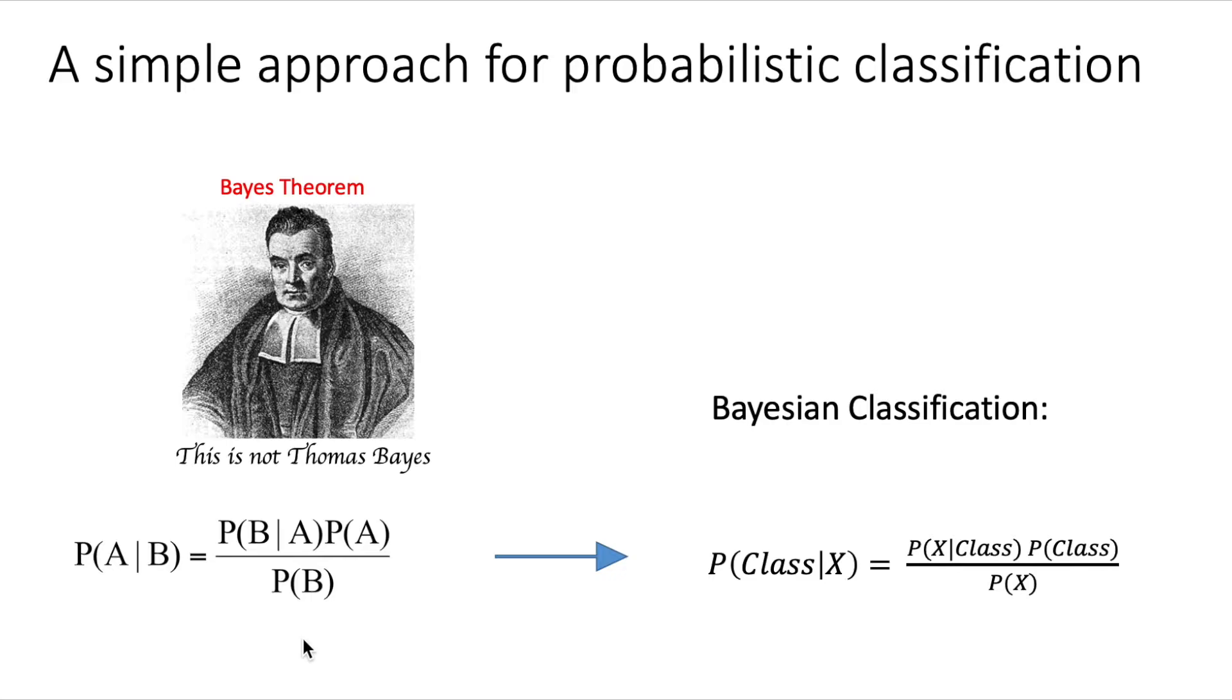So using this same theorem, we can instead of A use the class we want to predict and B will be all the variables that describe x, the input data. So in order to perform classification, we're going to have to calculate these three terms: the probability of the vector given the class times the probability of the class divided by the probability of the vector.